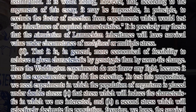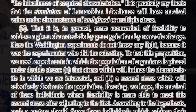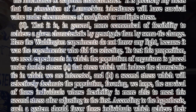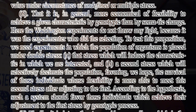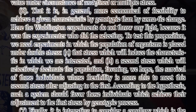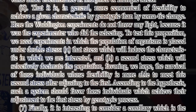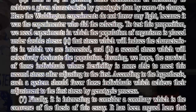6. That it is, in general, more economical of flexibility to achieve a given characteristic by genotypic than by somatic change. Here, the Waddington experiments do not throw any light because it was the experimenter who did the selecting. To test this proposition, we need experiments in which the population of organisms is placed under double stress: that stress will induce the characteristic in which we are interested, and a second stress will selectively decimate the population, favoring the survival of those individuals whose flexibility is more able to meet this second stress after adjusting to the first. According to the hypothesis, such a system should favor those individuals which achieve their adjustment to the first stress by a genotypic process.